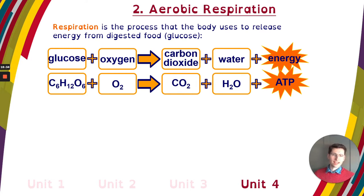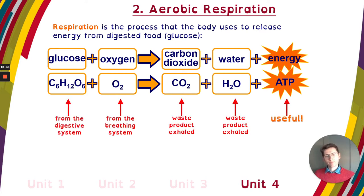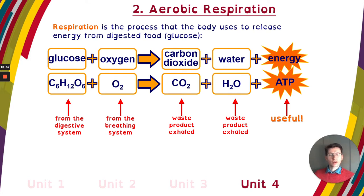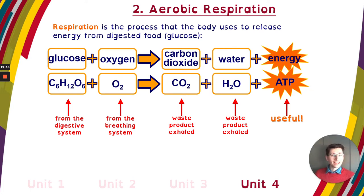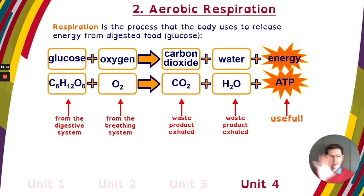The glucose comes from the digestive system — enzymes like carbohydrases break down starch into glucose, then it's absorbed in the small intestine. Oxygen is from the lungs, picked up by the blood and pumped around the body using the heart. Carbon dioxide is a waste product we exhale, and water is a waste product we exhale. A simple test: blow through a straw into lime water — it'll turn cloudy if there's carbon dioxide. For water, there's a paper test that changes colour — from yellow to pink or pink to purple.